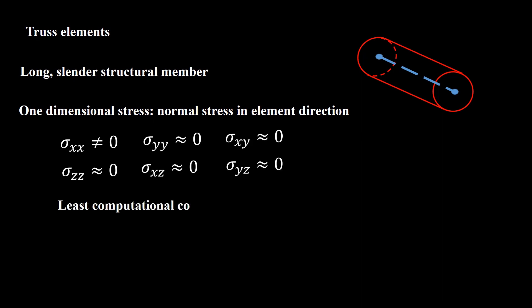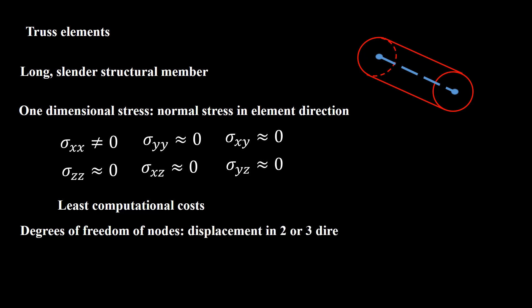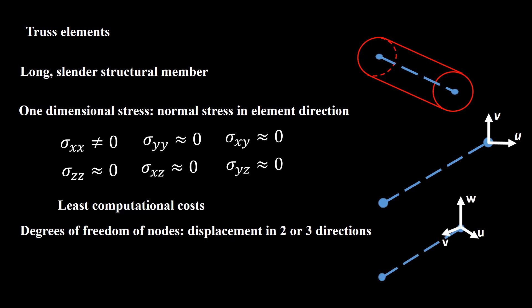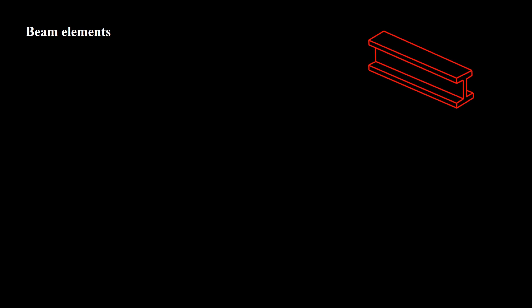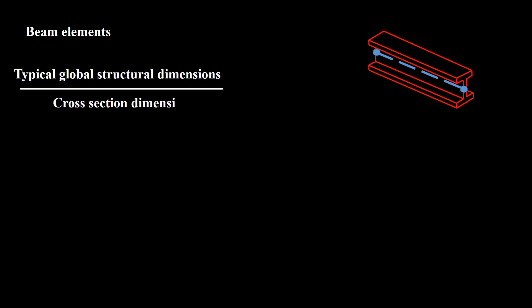Truss elements need the least computational cost among all element types. We can use 2D or 3D truss elements. In 2D truss, each node has two degrees of freedom, while in 3D truss elements each node can move in three directions. Use beam elements to model structures in which one dimension — the length — is significantly greater than the other two, and the longitudinal stress is most important. The structural typical axial dimensions should be at least 10 times bigger than the cross-section dimensions; examples of typical axial dimensions are the same as discussed for shell elements.